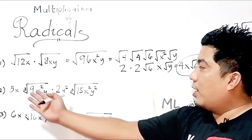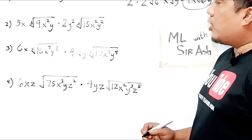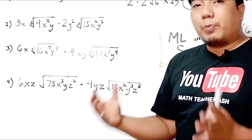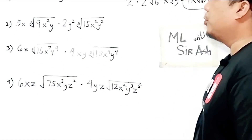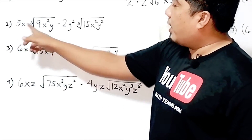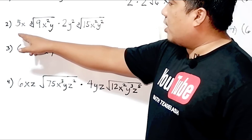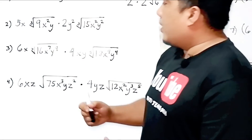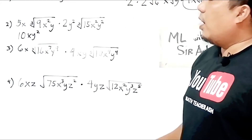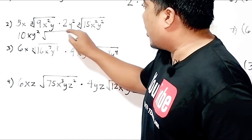Now let us go to our second example. We have 5x times the cube root of 9x²y, multiplied by 2y² times the cube root of 15x²y². As you can see, though each is a one-term expression, it has a coefficient and a radical expression. In this case, you multiply the coefficients together and then multiply the radical expressions separately. So for the coefficients: 5x times 2y² gives 10xy². For the radical expressions, we have cube root times cube root, so we can multiply them directly.